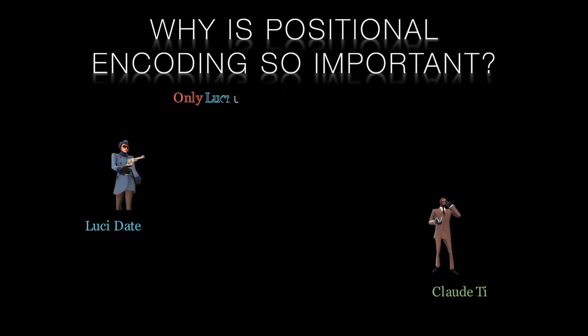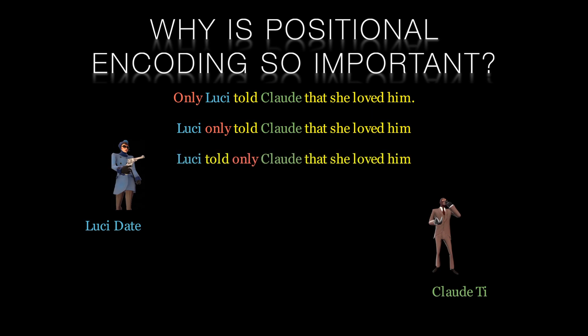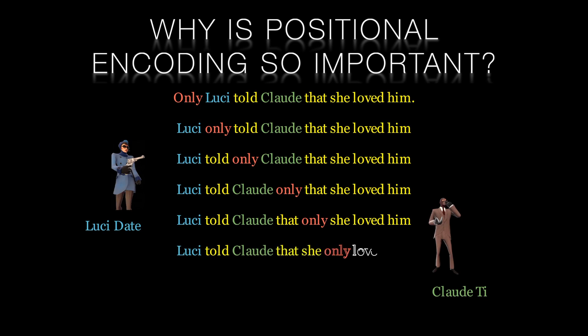Positional encoding allows the transformer to comprehend the order of words. Here's a slightly contrived example to show why this is so important. If you consider the following sentences, they all contain exactly the same words. The only difference is the position of the word 'only'. But look how it changes the meaning of each sentence.